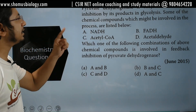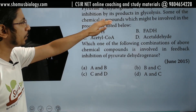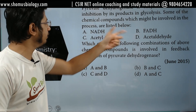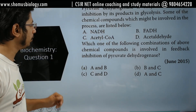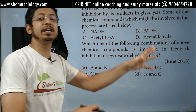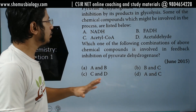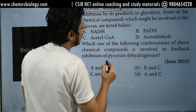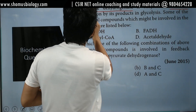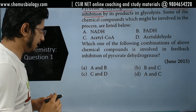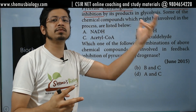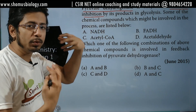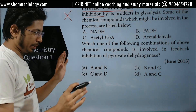The question states: pyruvate dehydrogenase is subject to feedback inhibition by its products in glycolysis. Some of the chemical compounds which might be involved in the process are listed below. So this is about the feedback inhibition process of an enzyme. The moment you are reading this question, you know this is about the pyruvate dehydrogenase enzyme and its feedback inhibition. These are the two key terms you need to know in order to answer the question. If you don't know these terms, immediately leave the question.